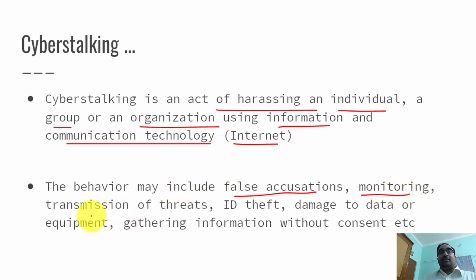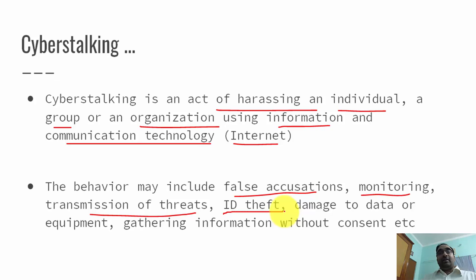Next is transmission of threats. Using phishing or some other social engineering technique, the attacker will try to install malware on the target's machine — such as a keylogger or a RAT (Remote Access Trojan) — to gain complete control of the target's system.